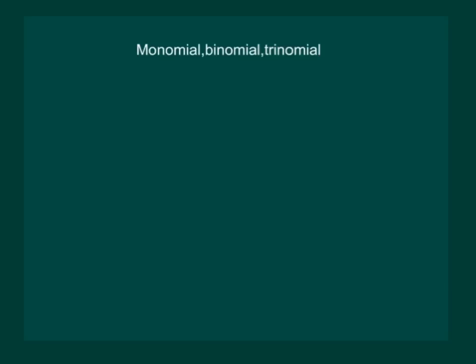An algebraic expression containing only one term is called a monomial. For example, 3y is an algebraic expression having only one term, namely 3y — hence it is a monomial. Other examples of monomials can be 7xy or (2/3)x²yz. All of these are examples of monomials.